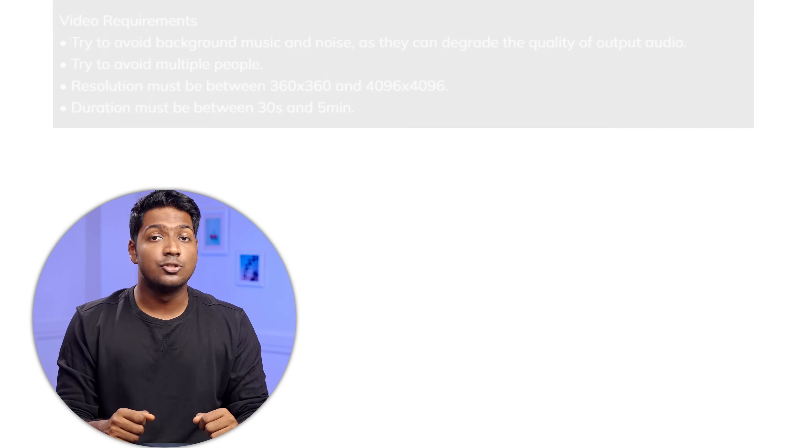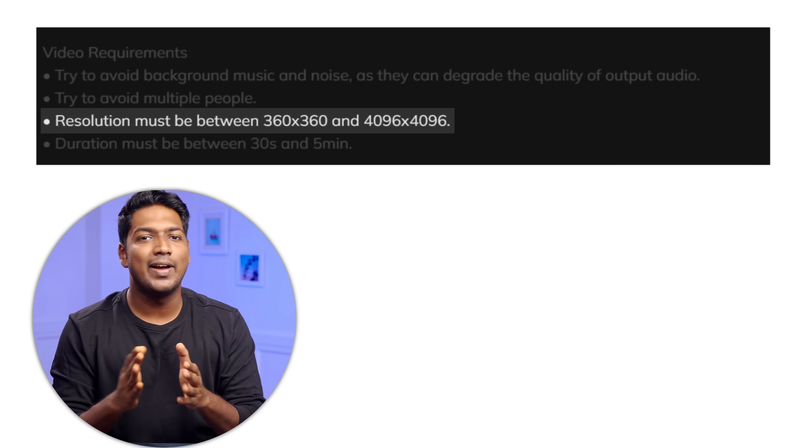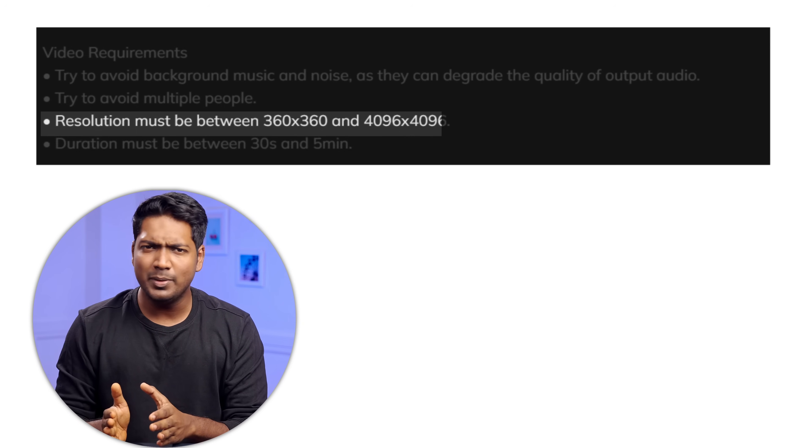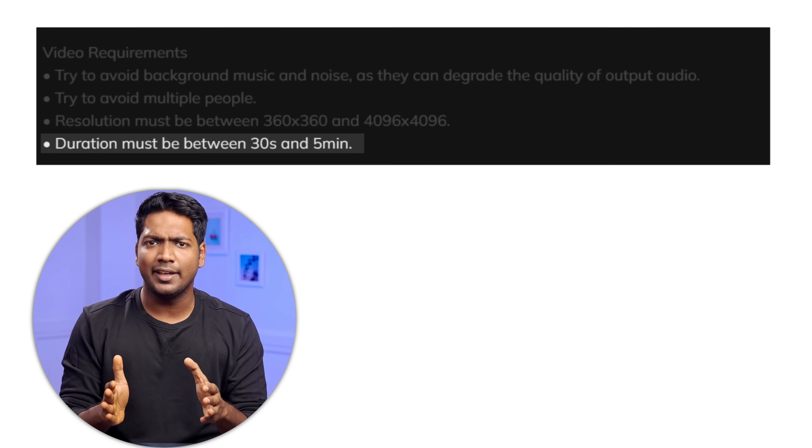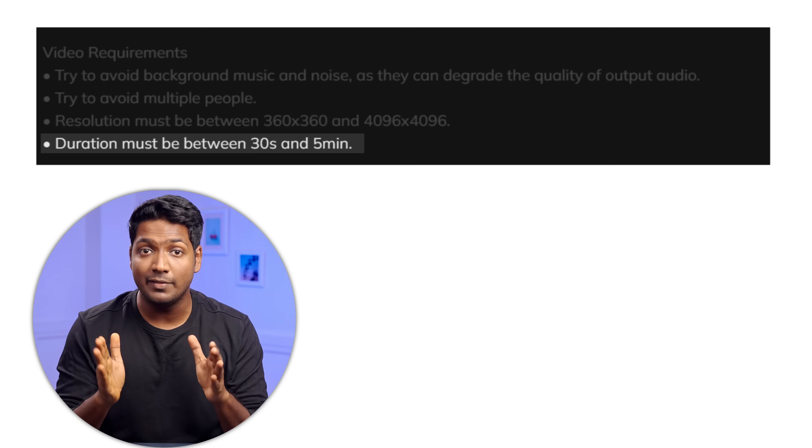Now before you upload your video, there are a few things to keep in mind. First, you need to make sure the audio quality is good. Second, don't have multiple people in the video — make sure there's only one person, so Hejan will be able to match the lip sync accurately. The video's resolution should be within the specified limits, and the video duration should be at least 30 seconds or up to a maximum of 5 minutes.